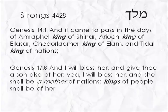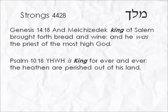Genesis 17:6 — 'And I will bless her and give thee a son also of her. Yea, I will bless her and she shall be a mother of nations. Kings of people shall be of her.' In Genesis 14:18 — 'And Melchizedek king of Salem brought forth bread and wine, and he was the priest of the most high God.' So his name Melchizedek means king of righteousness — he's the king of righteousness by his name. Psalm 10:16 — 'Yahweh is king forever and ever. The heathen are perished out of his land.'